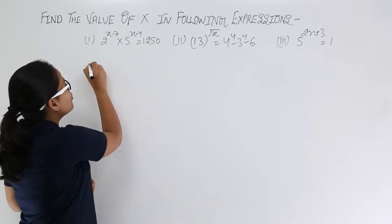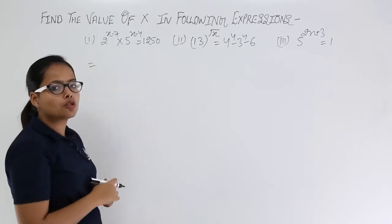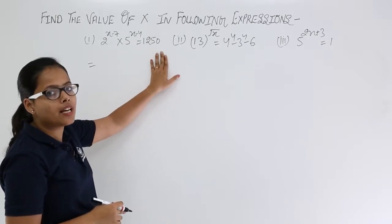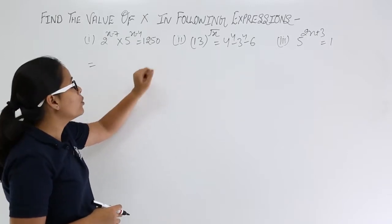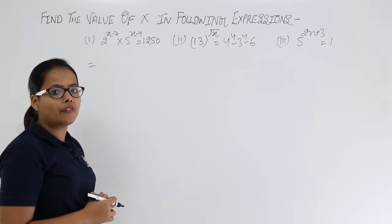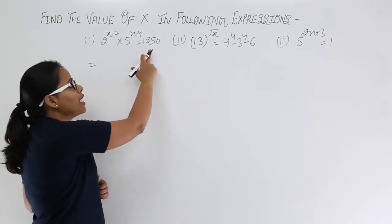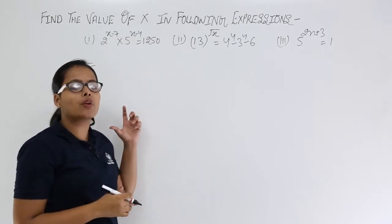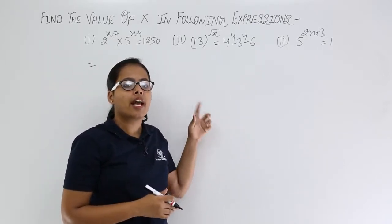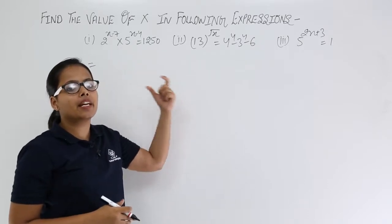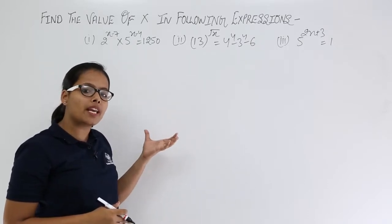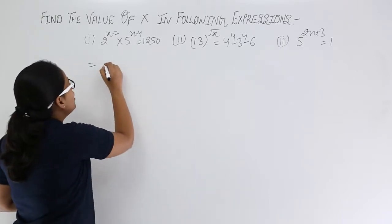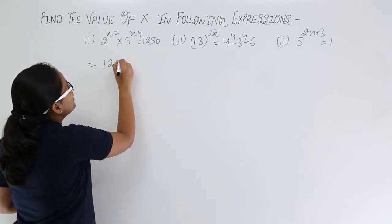How to solve this problem? You need to solve for x, and you can see the expression on the left hand side as well as the right hand side. There is a term 1250. You need to factor this in terms of 2 and 5 so that you can compare the two bases, and then after confirming the bases are the same, compare their exponents.